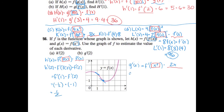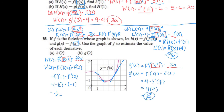For g prime of 2: I need f prime of 2 squared times 2 times 2, so f prime of 4 times 4. f prime of 4 is the slope of the tangent line at x equals 4 on the graph — that looks like about up 2 over 1, so approximately 2. So g prime of 2 is approximately 4 times 2, which is 8.